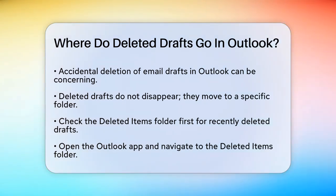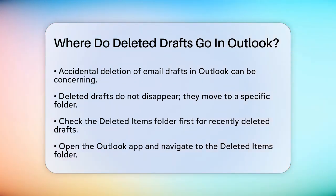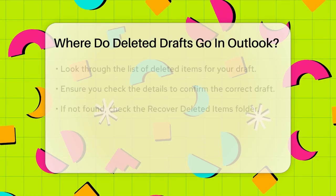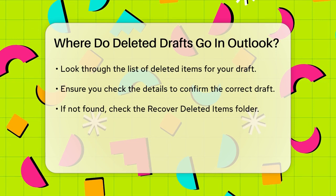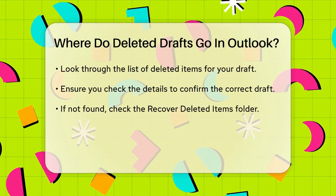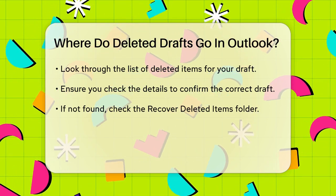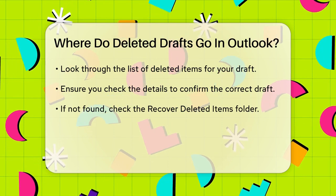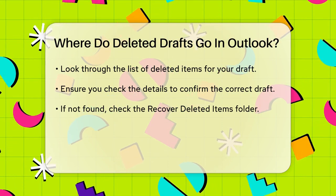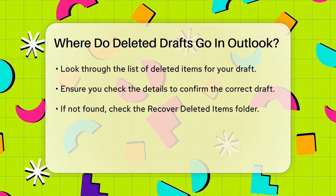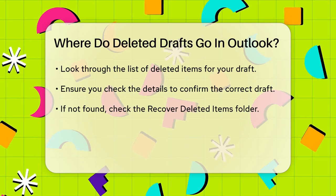The first place to check is the Deleted Items folder. This is where all deleted emails, including drafts, temporarily reside. To find your deleted draft, open your Outlook app and navigate to the Deleted Items folder. Here, you'll see a list of all the items you've recently deleted. Sift through this list and look for the draft you want to recover. Make sure to check the details to ensure you've got the right one.